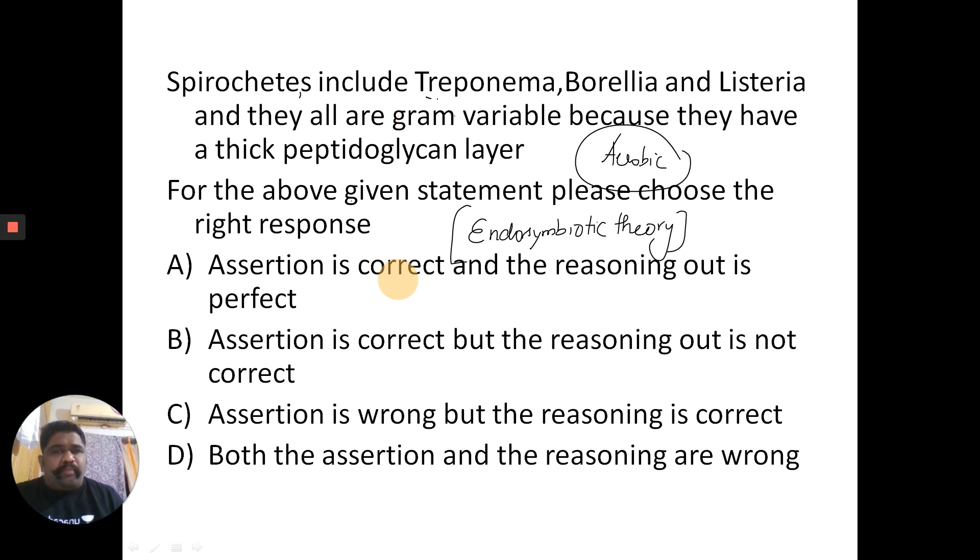Spirochetes include Treponema, Borrelia and it is not Listeria, it is Leptospira. So, if at all you are reading the statement in a hurry, you might miss on the statement that it is not Leptospira, it is Listeria given in the question paper. That makes the statement or assertion absolutely wrong.